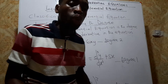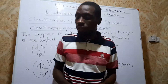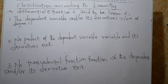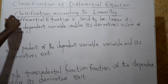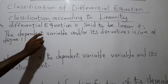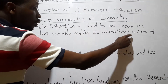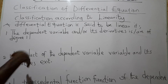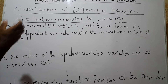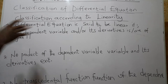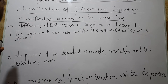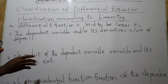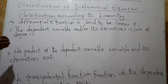The next classification is according to linearity. A differential equation is said to be linear if: condition one — the dependent variable and all its derivatives are of degree 1. When a differential equation is given, find out whether the degree of all derivatives and the dependent variable equals 1. If all degrees are 1, the equation may be classified as linear — but that alone is not sufficient.